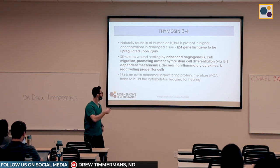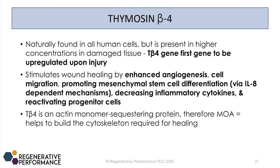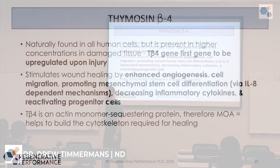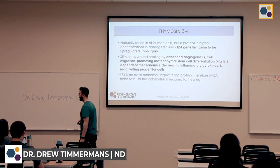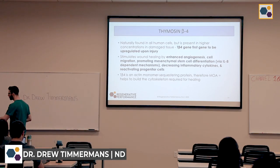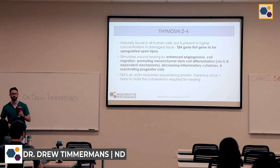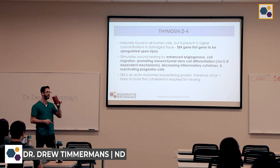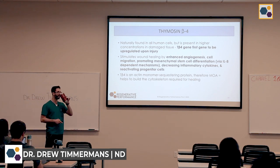Here are the pleiotropic effects we talked about. TB4 is going to increase angiogenesis, increase cell migration, promote mesenchymal stem cell differentiation — with some caveats we'll discuss — activate progenitor cells to help with native healing, and decrease cytokines.